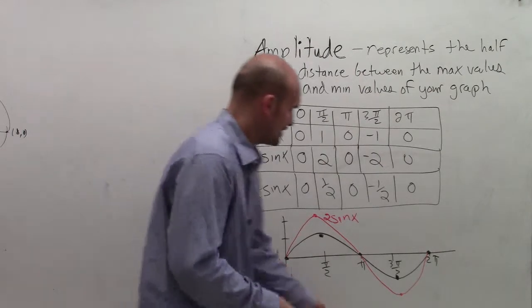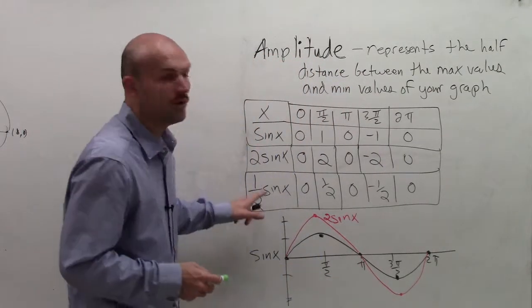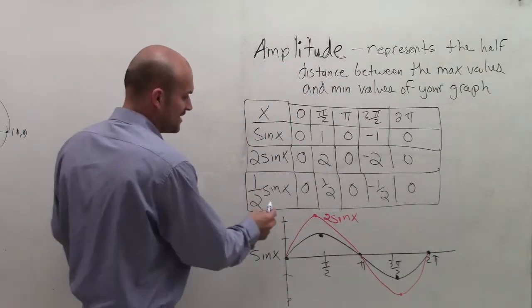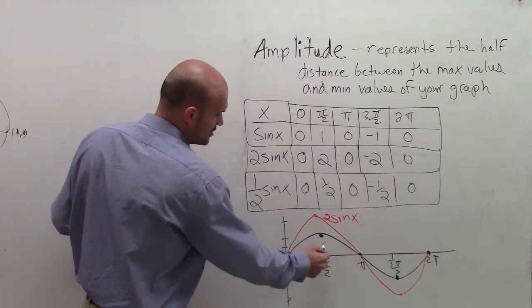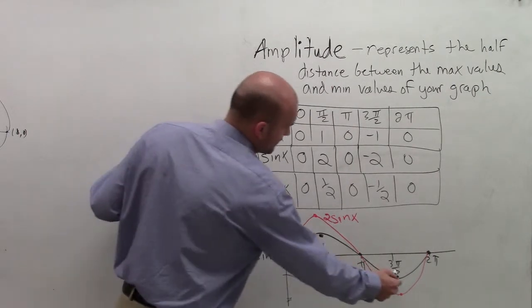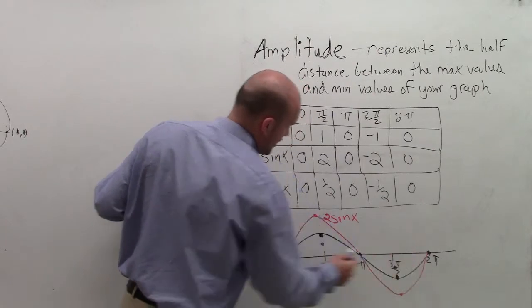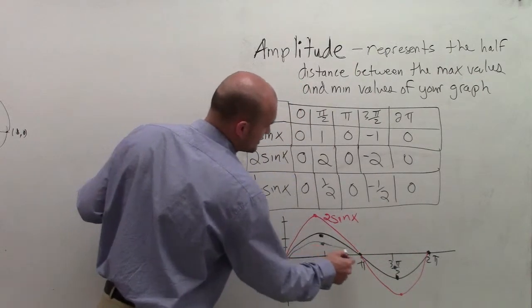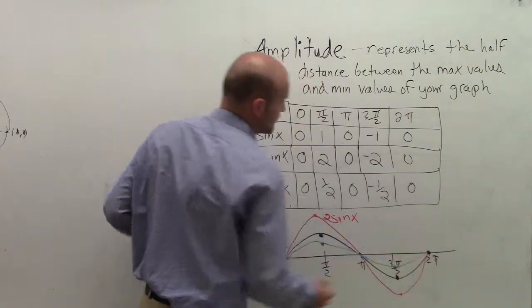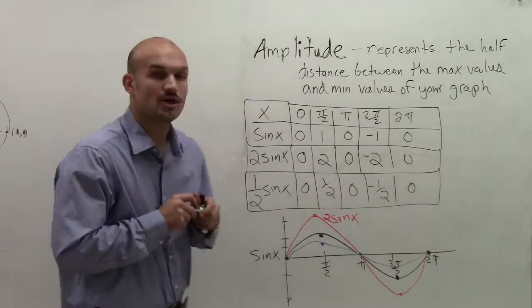And then the last one we can graph would be the one half sine of x. And one half sine of x goes half the distance up. So it's only going to go up to one half, down to negative one half, but it still always meets the exact same x intercepts that our original function did.